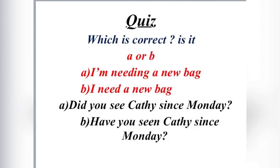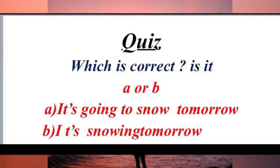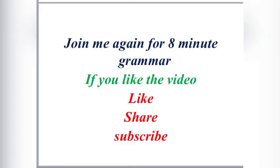Quiz — which is correct, A or B? First: A. 'I'm needing a new bag.' B. 'I need a new bag.' Second: A. 'Did you see Cathy since Monday?' B. 'Have you seen Cathy since Monday?' Third: 'It's going to snow tomorrow' or 'It's snowing tomorrow' — which is correct? Join me again for 8-minute grammar. If you like this video, like, share, and subscribe. Thank you!